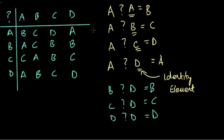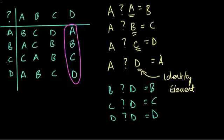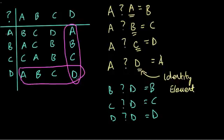An easy shortcut: the identity element will sit at the intersection of the row and column where A, B, C, and D intersect. Whatever you're given — here we're given A, B, C, D — you'll find that somewhere in one of the columns in the exact same order, and somewhere in one of the rows in the exact same order. Where it intersects, that's your identity element. The column A, B, C, D represents the results when we inputted A, B, C, and D. If it's the identity element, it gives us exactly what we started with in that exact same order.